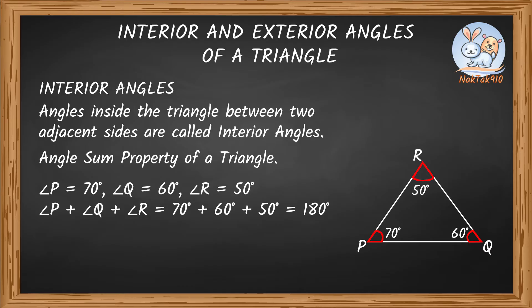Now, can I check if these sets of angles form a triangle? 85 degrees, 35 degrees, and 60 degrees. According to the angle sum property, the sum of angles in a triangle is 180 degrees.